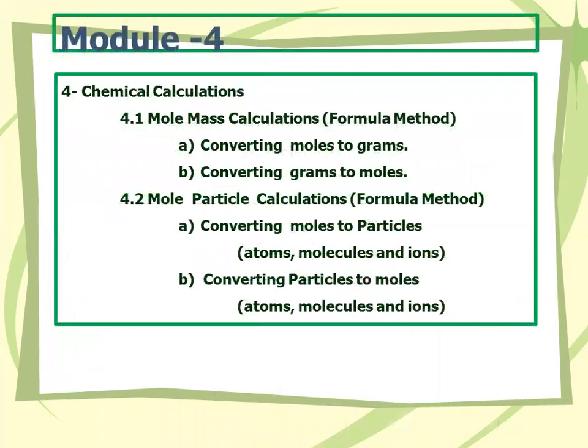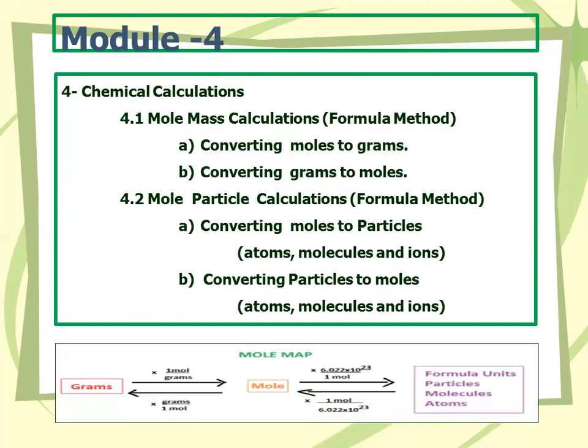Module number four, we start chemical calculations. In the first step, we are going to calculate mole-mass calculations using the formula method — converting moles to grams, and then converting grams to moles. In the second step, mole-particle calculation by formula method: converting moles to particles — that is atoms, molecules, and ions — and then converting particles to moles, that is atoms, molecules, and ions.